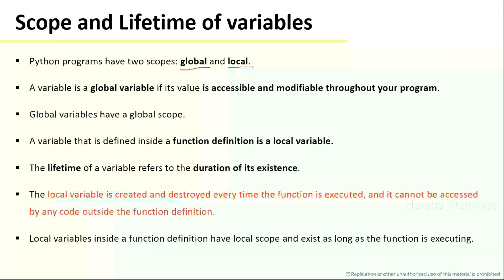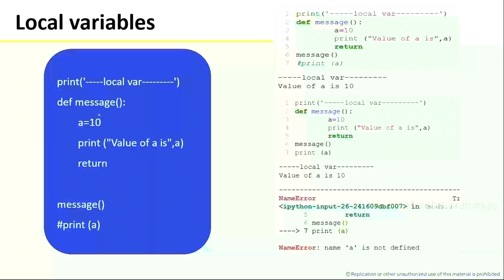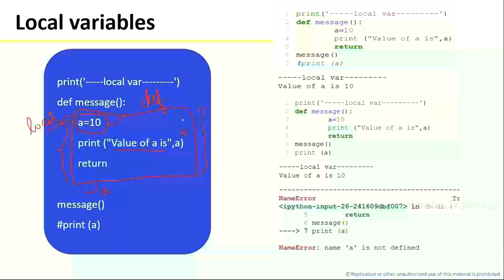Let me start with the problem, then I'll come back to the theory part. If I declare any variable within the function definition, that is a local variable. Here, a equals 10 — this is inside a function definition. This local variable can be accessed only within the scope of this block; outside of this block I cannot access it. Value of a is 10 — that is accessible only within this block.